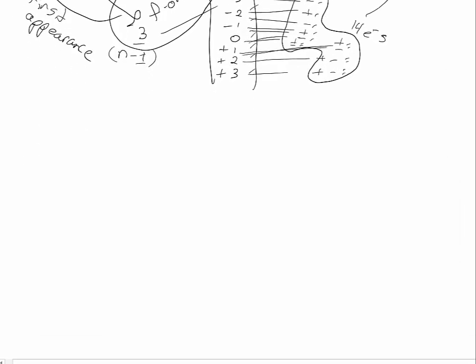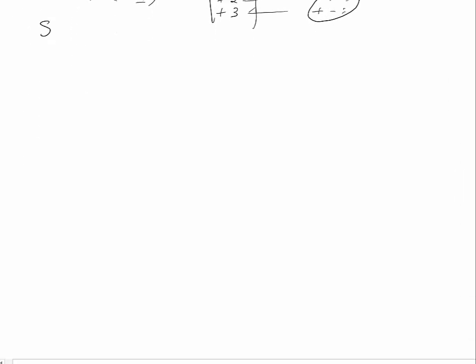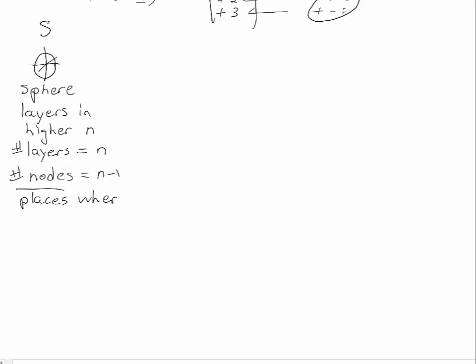Also as a reminder, the single s orbital is a sphere, a single sphere. That sphere will have layers in higher shell numbers or higher n. And the number of layers equals the shell number. And the number of nodes equals n minus one. And these nodes are the places where the probability of finding the electron equals zero.